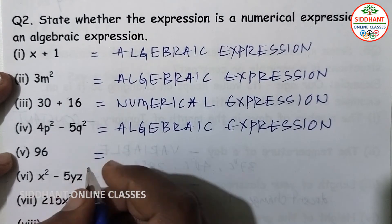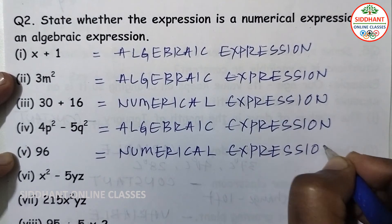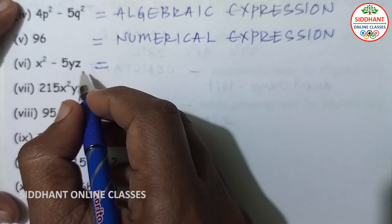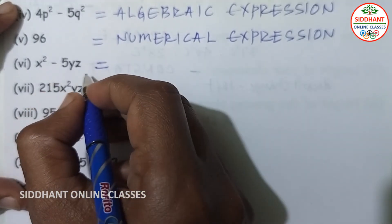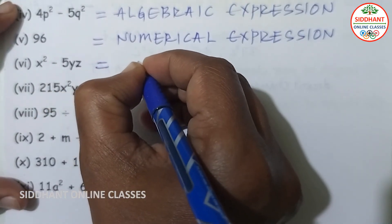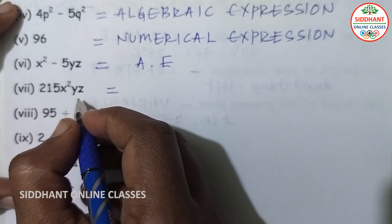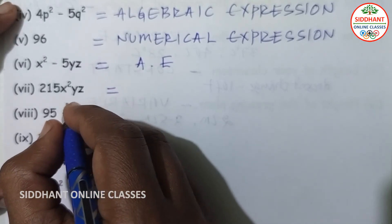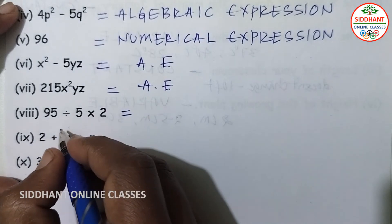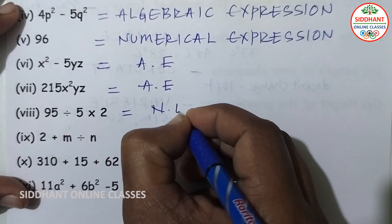Fifth — 96 — only a number, so it is a numerical expression. Sixth — 215x square yz — has variables, so it is an algebraic expression. Seventh — 95 divided by 5 into 2 — all numbers, so it is a numerical expression.